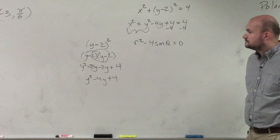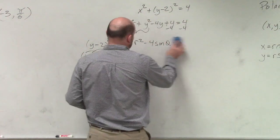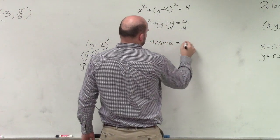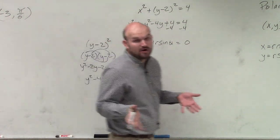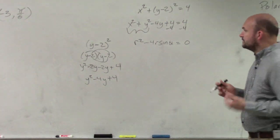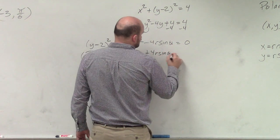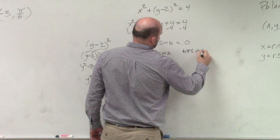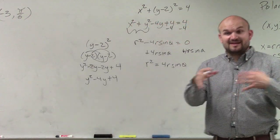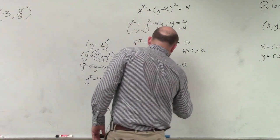That was minus 4r sine theta. Now we still want to solve for r. What we could do is add 4r sine theta to both sides, and you get r squared equals 4r sine theta. The only reason I'm doing this is because if I can divide by r, I eliminate an r, and I'm left with r equals 4 sine theta.